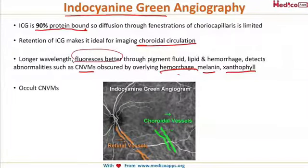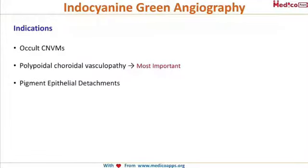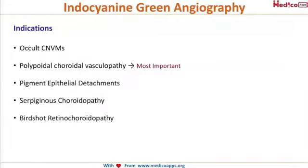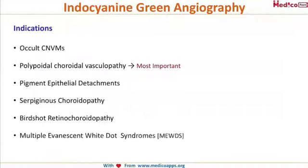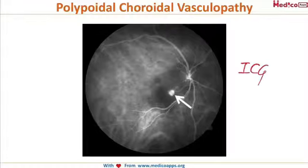The indications for indocyanine green angiography include occult CNVM, polypodial choroidal vasculopathy, pigment epithelial detachments, serpiginous choroidopathy, birdshot retinochoroidopathy, and multiple evanescent white dot syndrome. ICG can visualize the polyps in polypodial choroidal vasculopathy clearly.